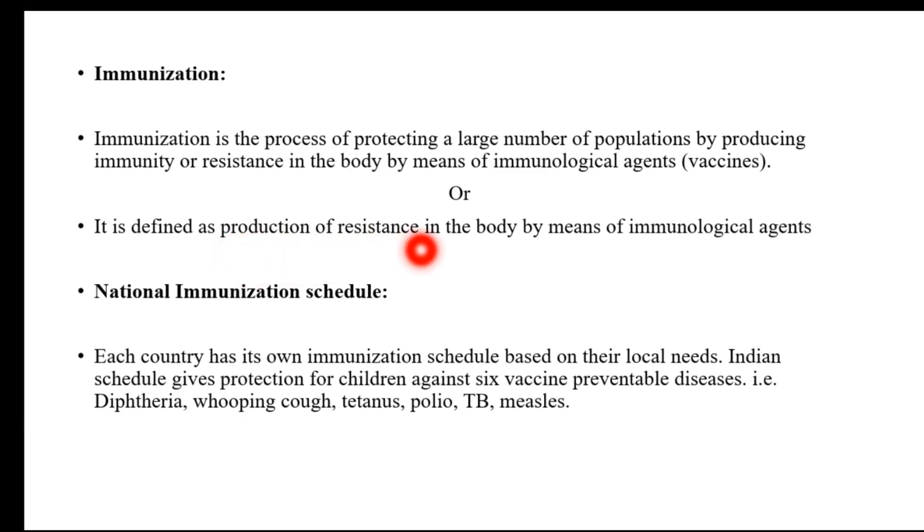Hello dear learners, today we are going to discuss Part 4, which is the extension of Experiment 1 from social pharmacy, wherein we are going to talk about the national immunization programs for infants and children. In the earlier video we covered the principles behind the national immunization program. In this part we are going to discuss in detail what the national immunization programs are.